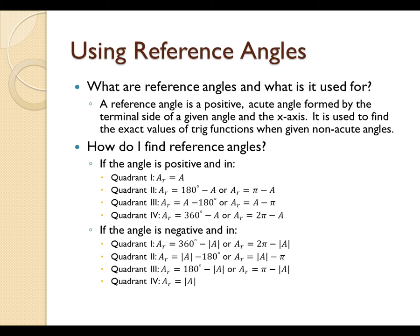For example, if you had an angle of negative 300 degrees, your reference angle would be 60 degrees and you would be in the first quadrant.